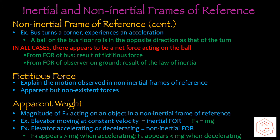Another example is a bus turning a corner. The bus experiences an acceleration because there's either a direction change, a velocity change, or both. A ball on the bus floor rolls in the opposite direction of the turn — so if the bus makes a sharp turn to the right, the ball rolls to the left. In all three of these cases, there appears to be a net force acting on the ball. From the frame of reference of the bus, this is the result of a fictitious force. From the frame of reference of an observer on the ground, however, this is the result of the law of inertia.